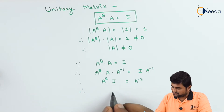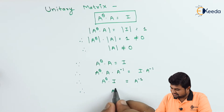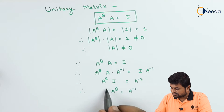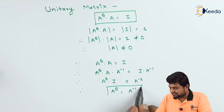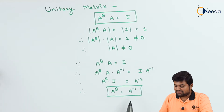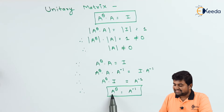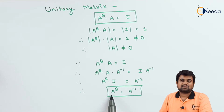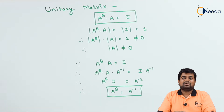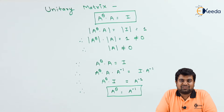Therefore, A-theta into I equals A-theta, which equals A-inverse. So the formula is: in a unitary matrix, the inverse of the matrix is nothing but its transpose conjugate, A-theta. This is the key point to remember.